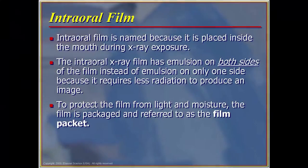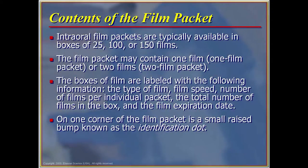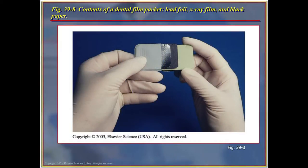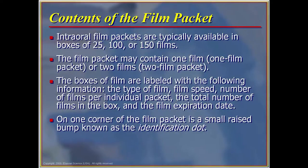Intraoral film is named because it is placed inside the patient's mouth during x-ray exposure. The intraoral film has emulsion on both sides of the film and requires less radiation to produce an image. To protect the film from light and moisture, the film is packaged and referred to as the film packet. Packets generally come in boxes of 25, 100, or 150. The film packet may contain one film or it may be a two-film packet. Many offices use the two-film package and keep one as a record to send to the patient or referring doctors, rather than having to duplicate the original.